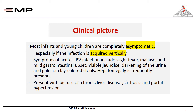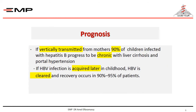It is the same clinical picture. Patients may present with a picture of chronic liver disease, cirrhosis, and portal hypertension. If vertically transmitted from mothers, 90% of children infected with hepatitis B progress to chronic disease with liver cirrhosis and portal hypertension.